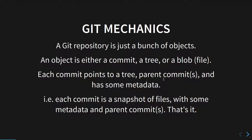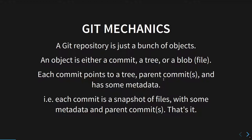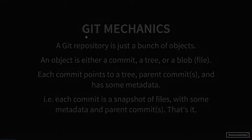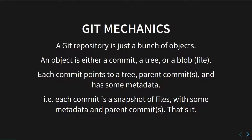All git objects — commits, trees, blobs — are identified by their hash. When I say a git repository is just a bunch of objects, that's literally what it is. Later, we'll see there's an objects directory in the git directory containing all the different objects, all referred to by their hash.